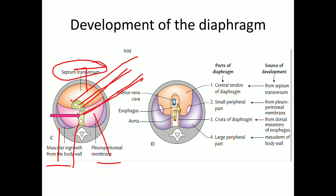The central tendon of the diaphragm develops from the septum transversum. The small peripheral part of the diaphragm develops from the pleuroperitoneal membrane. The crura of the diaphragm develop from the dorsal mesentery of the esophagus. And the large peripheral part of the diaphragm develops from the mesoderm of the body wall.